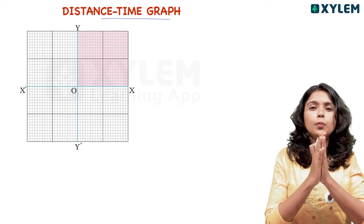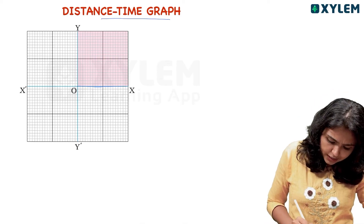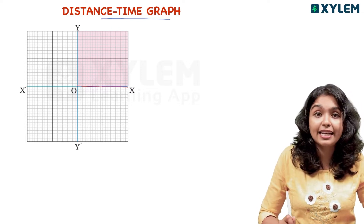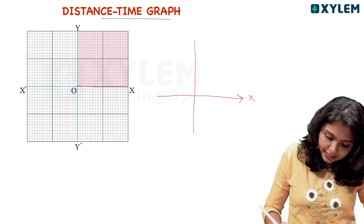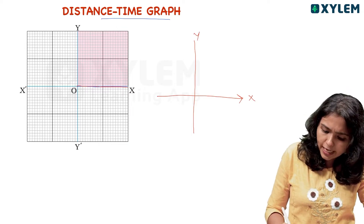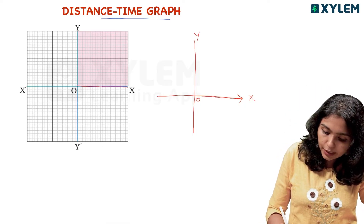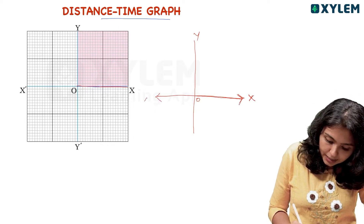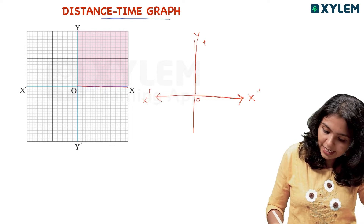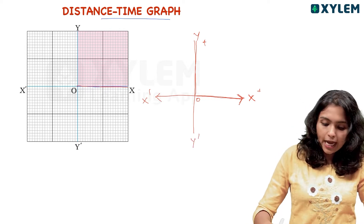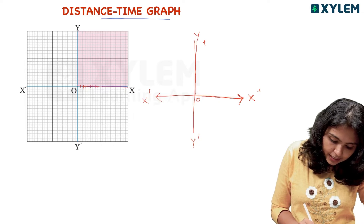The distance-time graph works on graph paper. The graph paper has an x-axis and y-axis. The two axes meet at a point of intersection called the origin. The positive x-direction is x, the negative is x'. The positive y-direction is y, and the negative is y'. In the graph, you will notice there are 10 lines — if you look at the scale, 10 lines equal 1 cm.